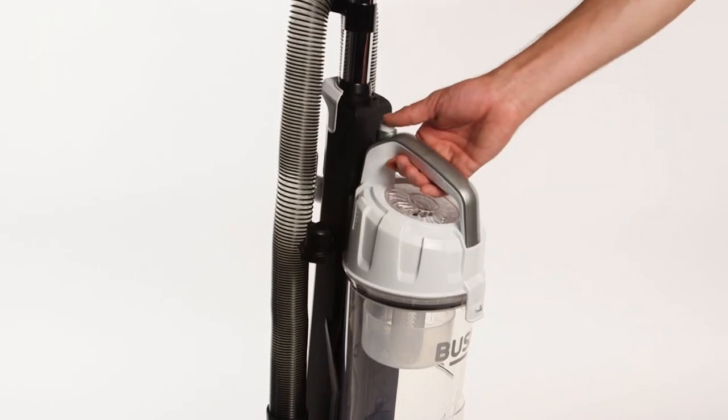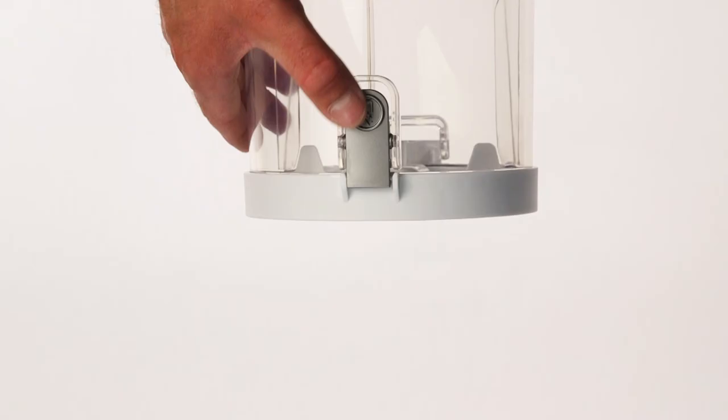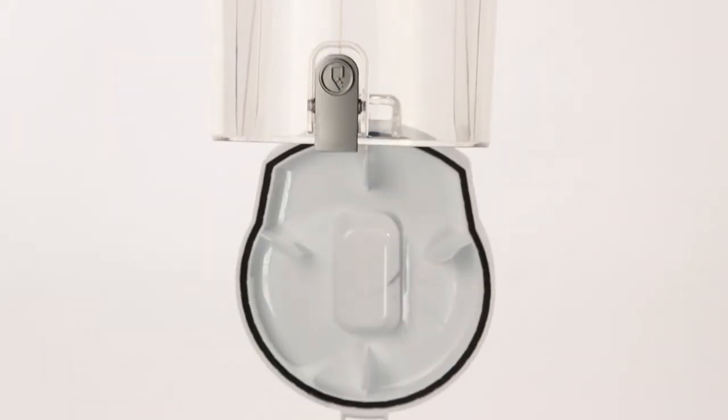To empty the container, press the release button and pull the container away from the vacuum body. Press the lever on the dust container to empty it.